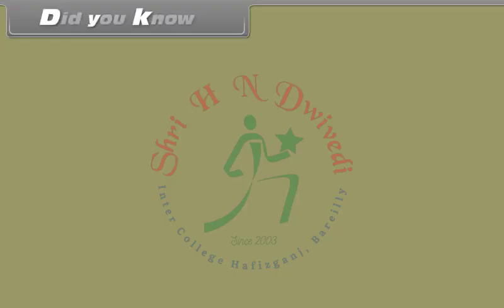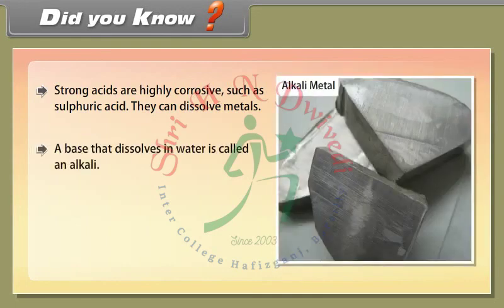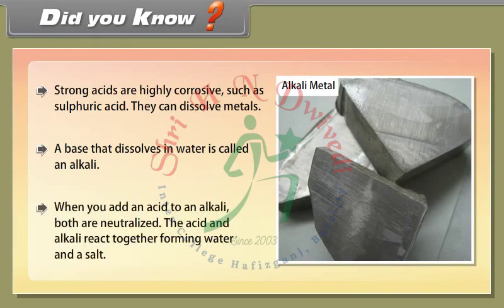Did you know? Strong acids are highly corrosive — sulfuric acid can dissolve metals. A base that dissolves in water is called an alkali. When you add an acid to an alkali, both are neutralized, forming water and a salt.